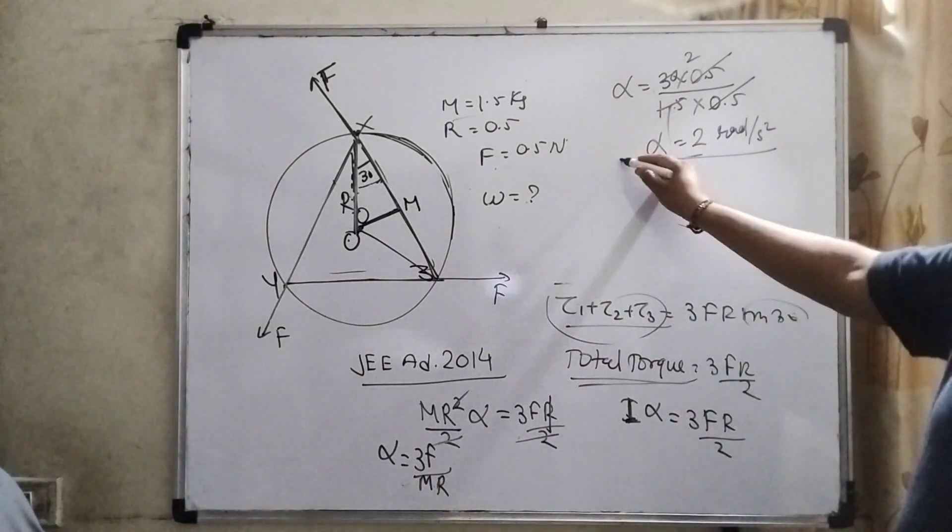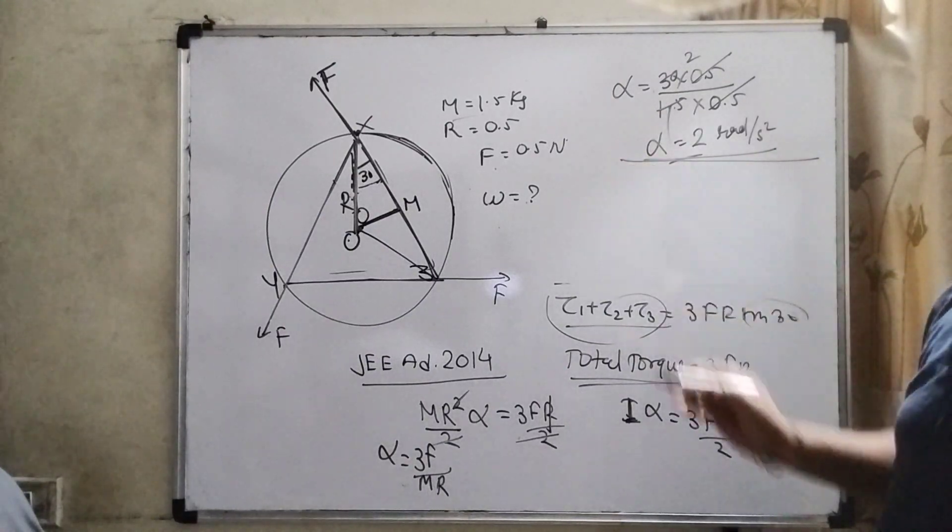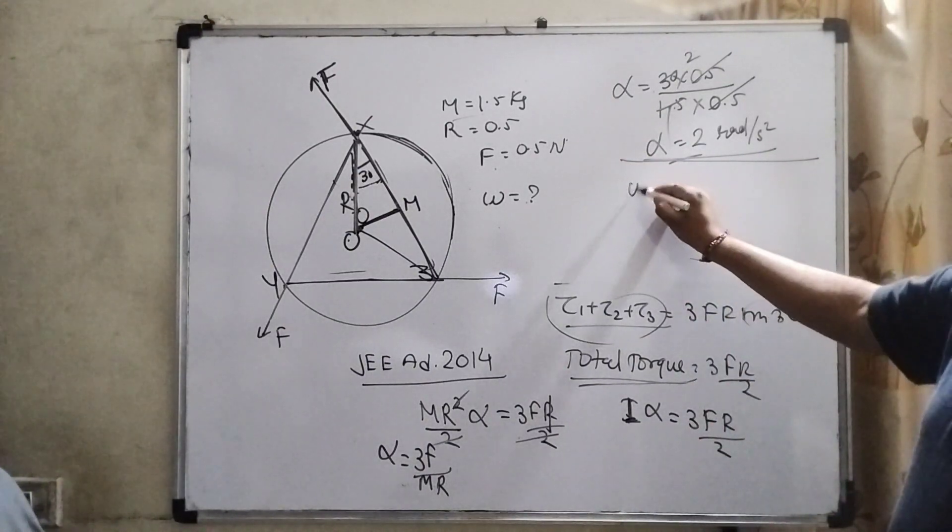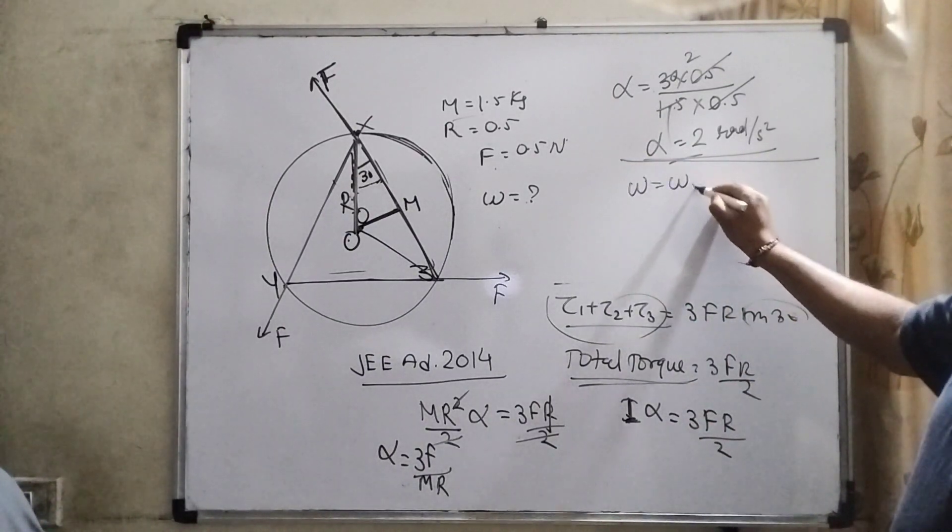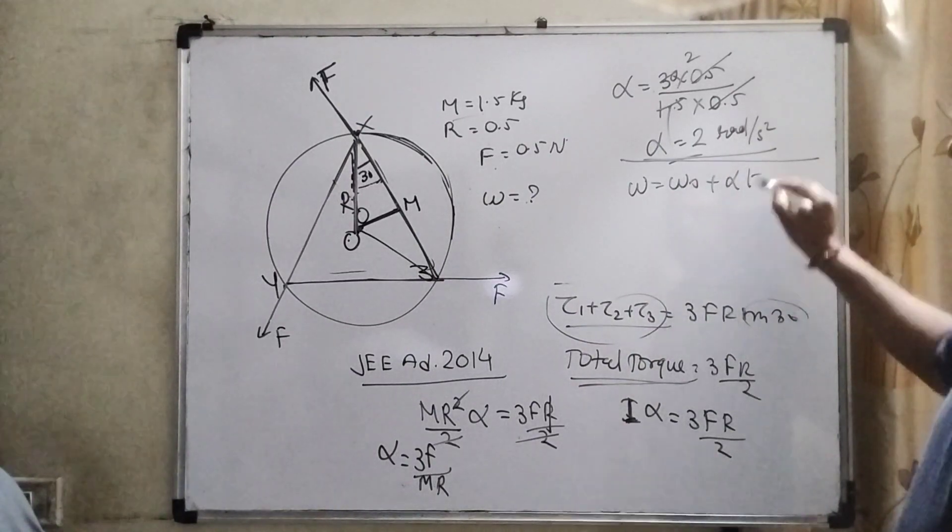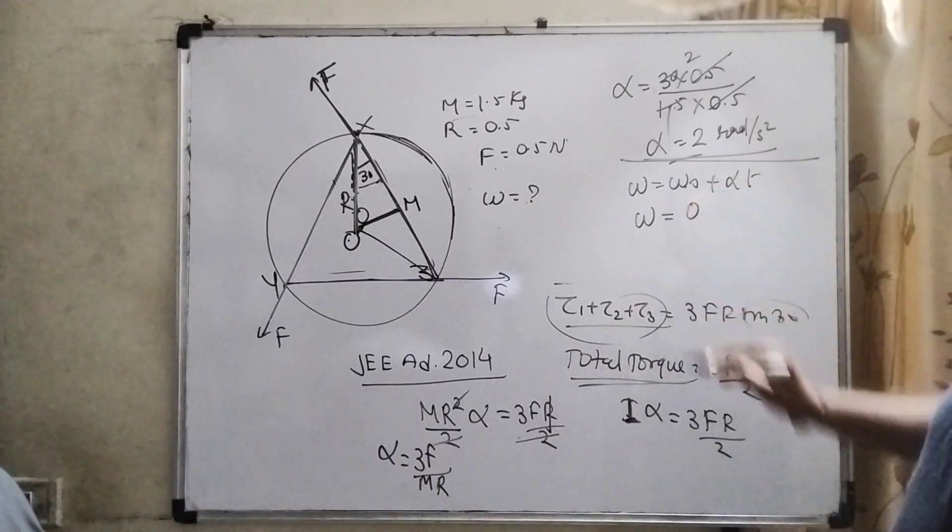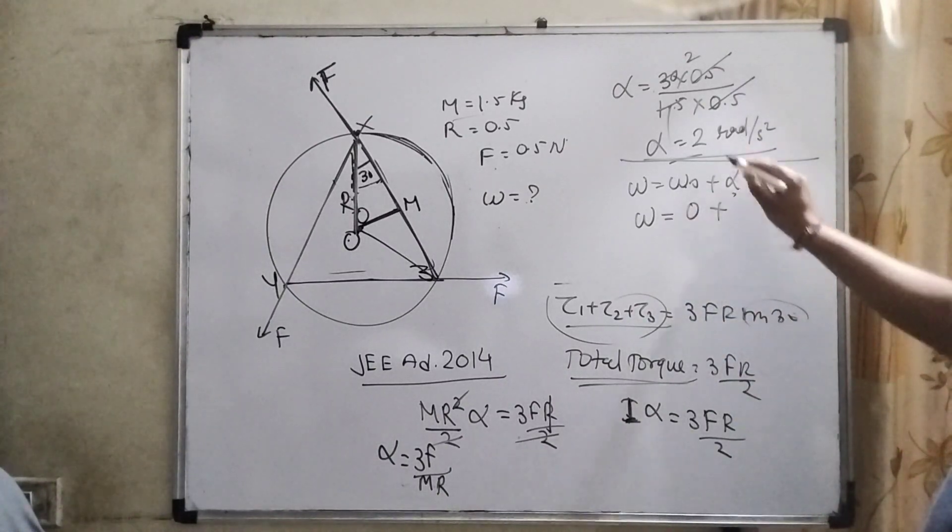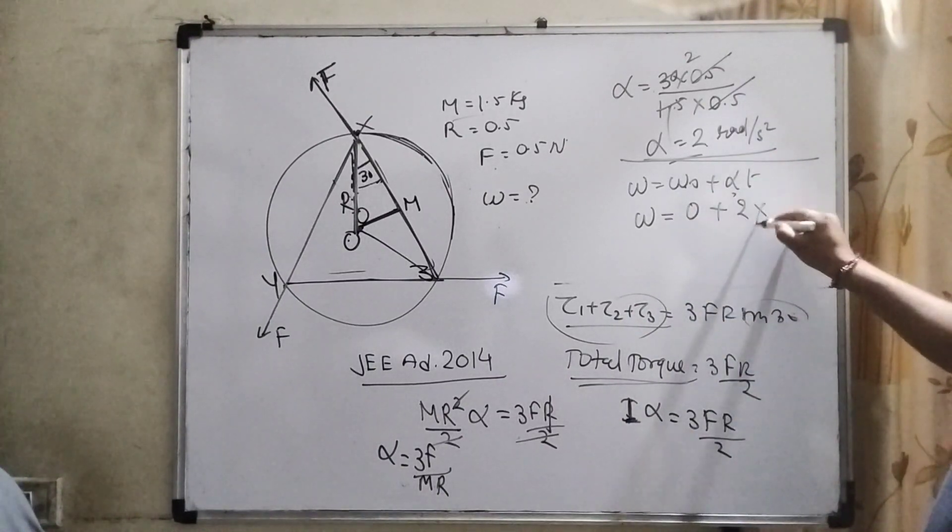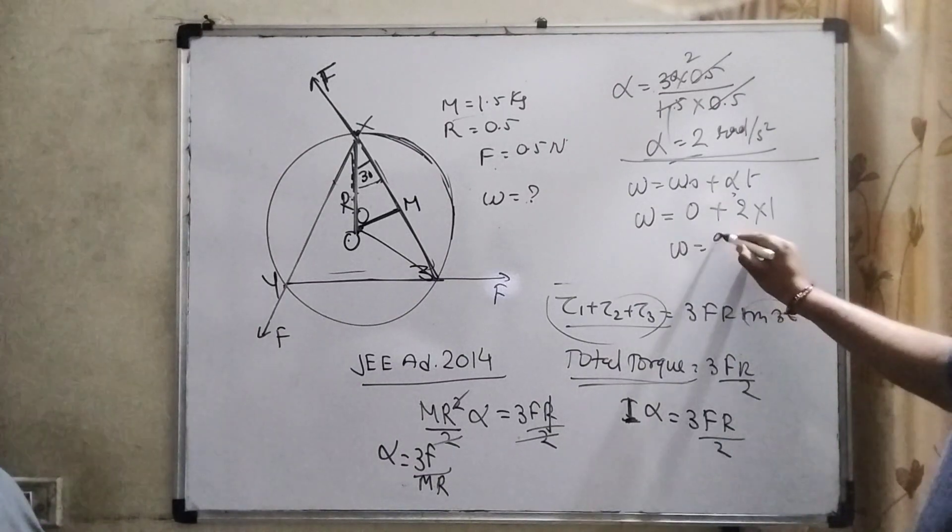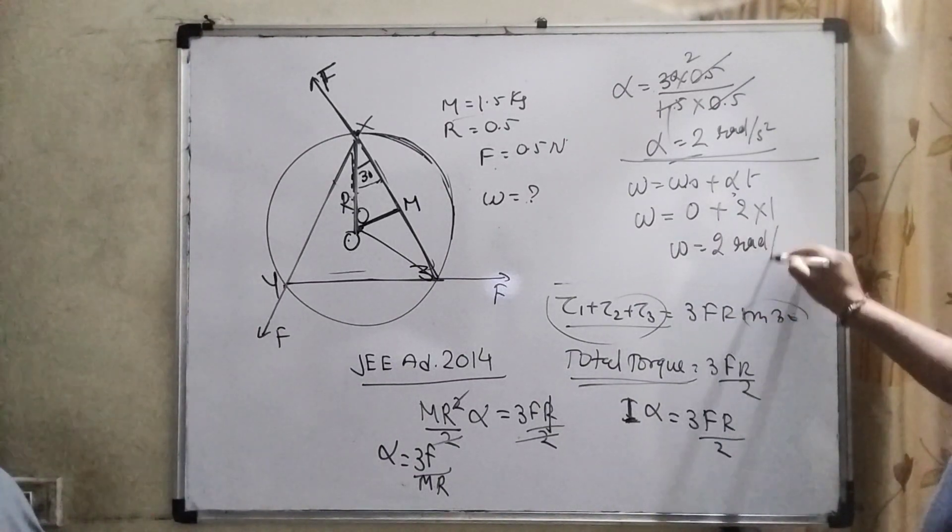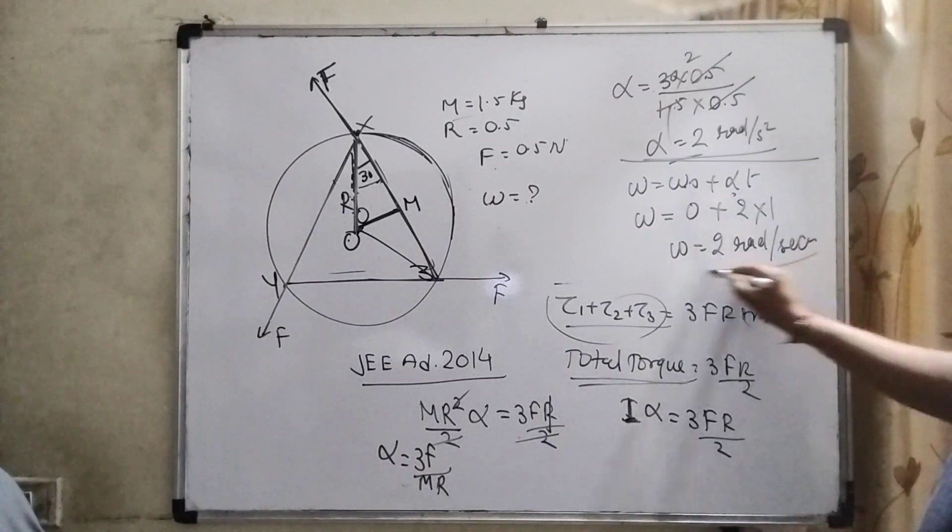But we have to find out omega. Then by using or applying rotational kinematic equations, omega equal to omega 0 plus alpha into t. You can see that initial velocity is 0 plus alpha is 2 radian per second square and time is 1 second. Then omega equal to 2 radian per second. It is the correct answer.